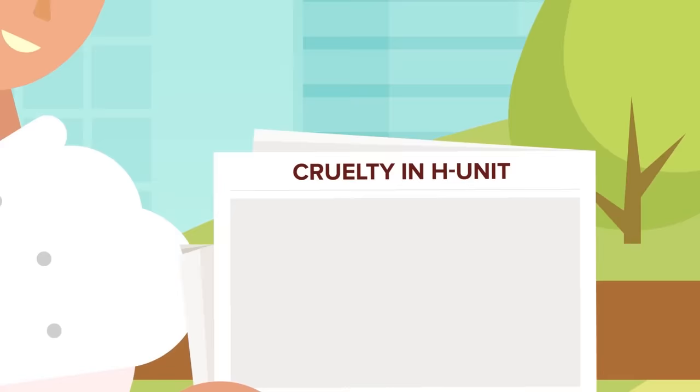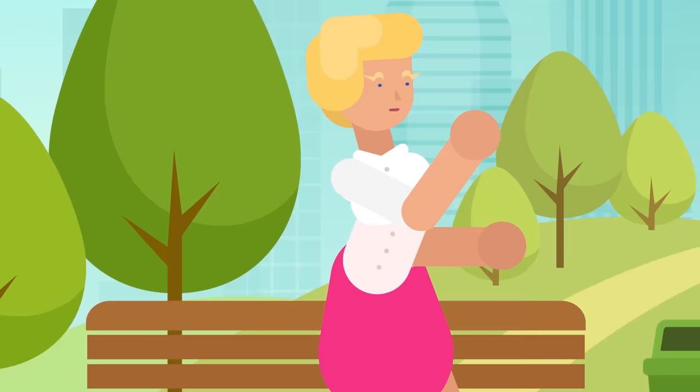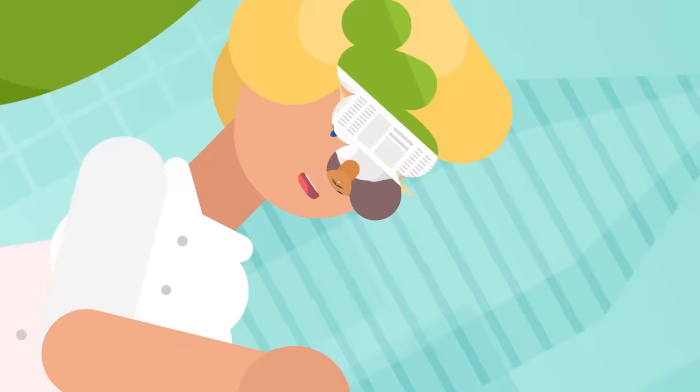Yet, the conditions inside H-Unit speak loudly about our own values. We shouldn't let the hatred and violence of others compromise our own values and the nation we strive to be. Justice must be served, and evil must be punished. But how we do these things speaks more about who we really are as a society than our laws do.